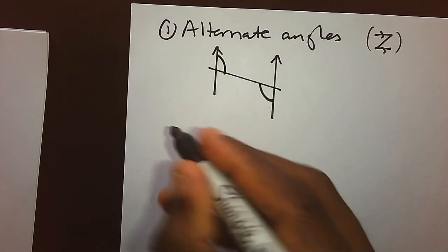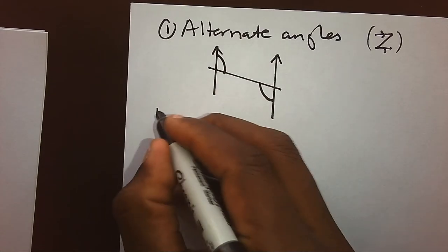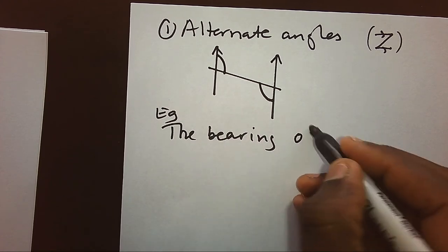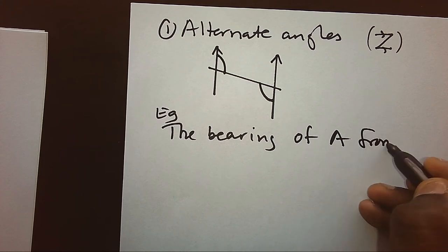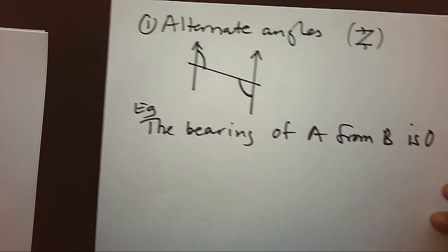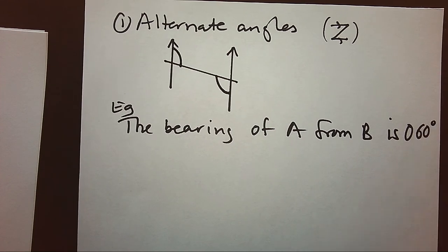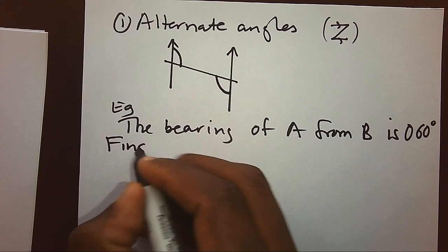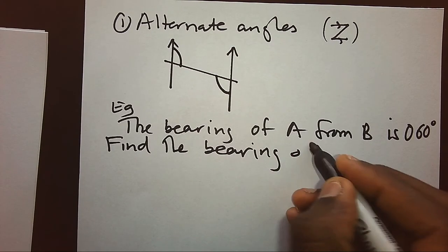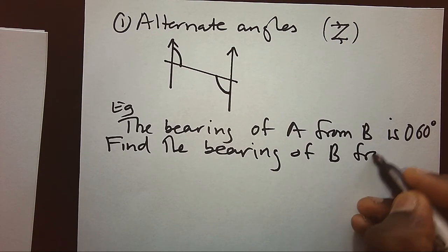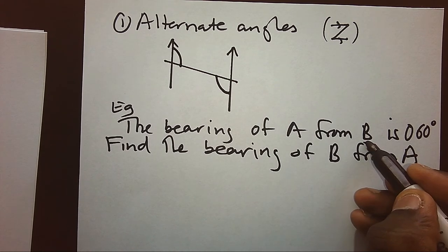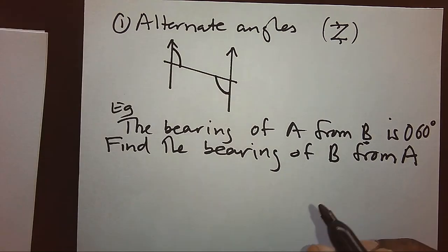Parallel lines alternate angles state that the angle there is always equal to the angle here. Now based on that rule we can have an example. E.g., the bearing of A from B is 060 degrees. Find the bearing of B from A. Now first we can tell the bearing of B starting from B to see A - this is our bearing.